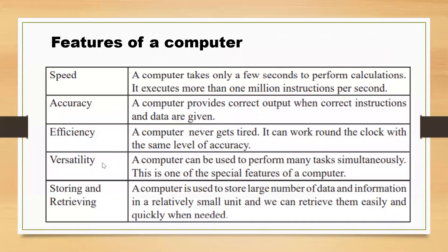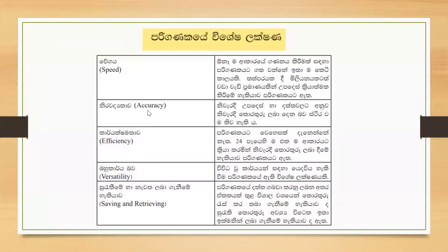Correction, versatility — multitasking simultaneously. A computer can do more, can achieve more tasks. And storing and retrieving — so there are so many features. Those are very important. That's why normally this is the most powerful tool in the world.